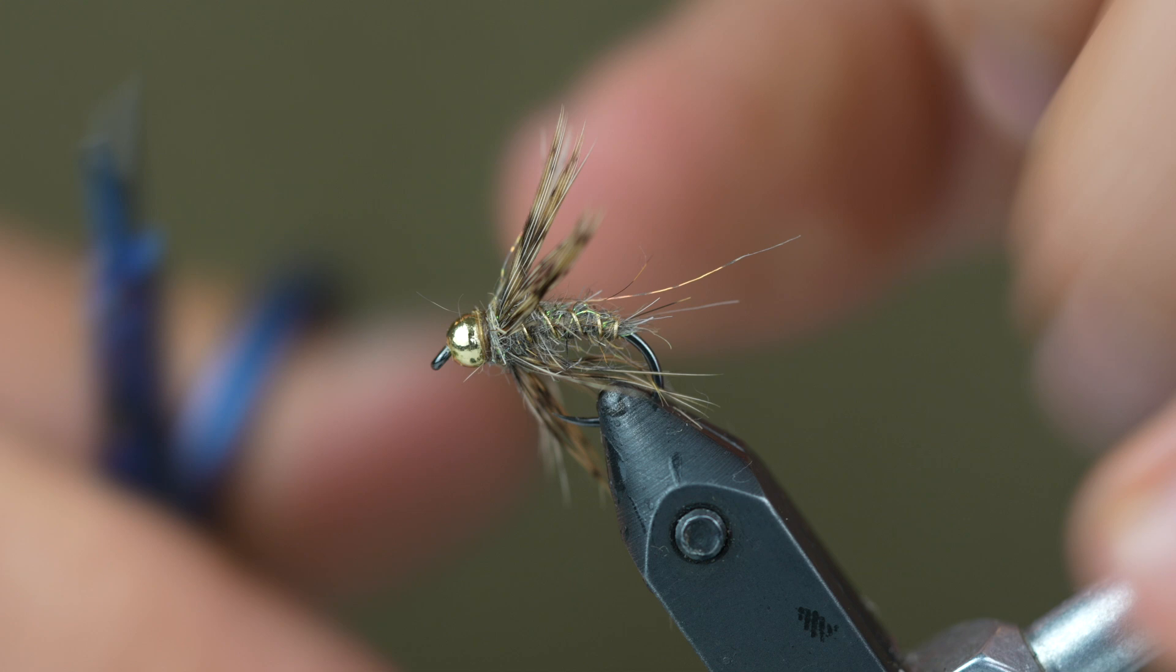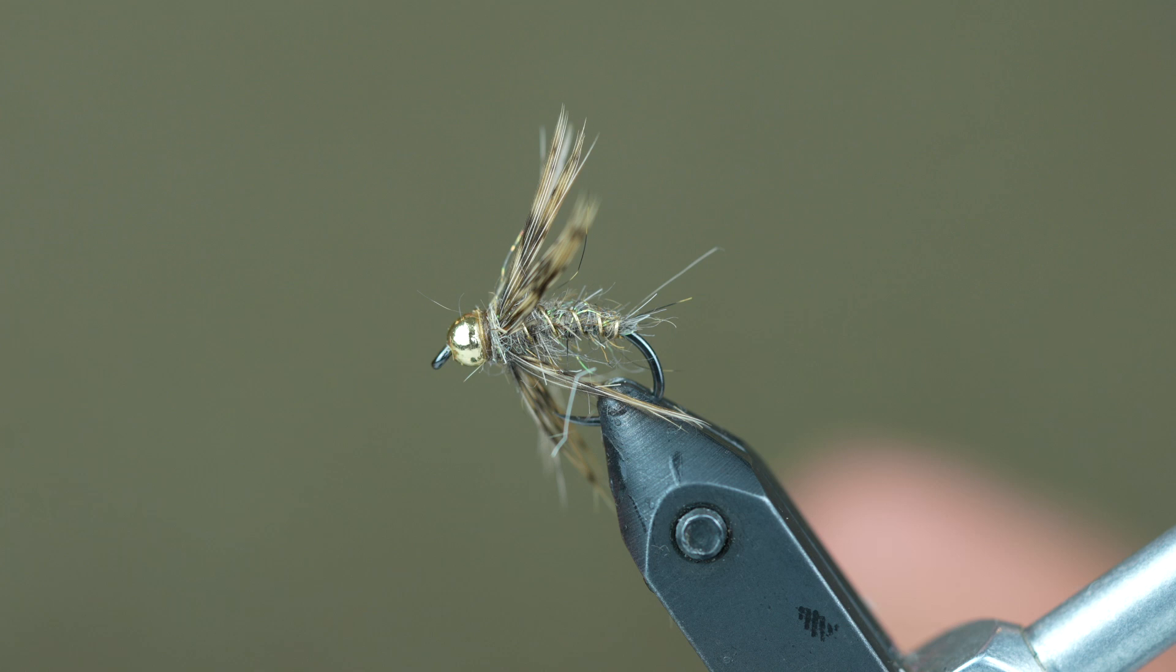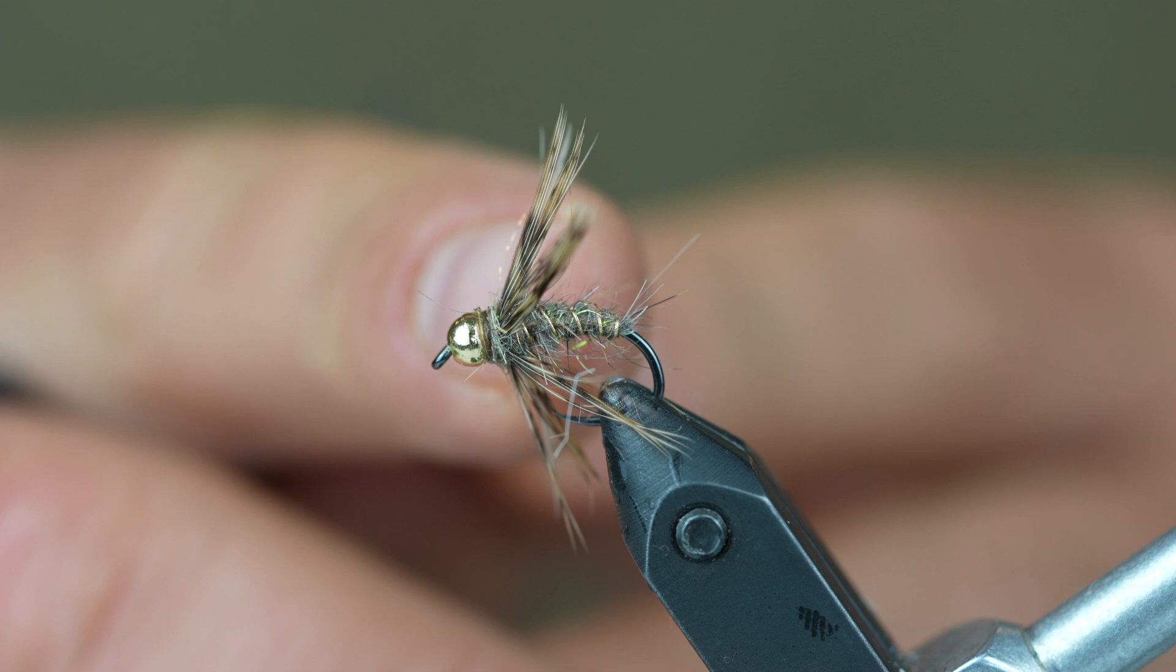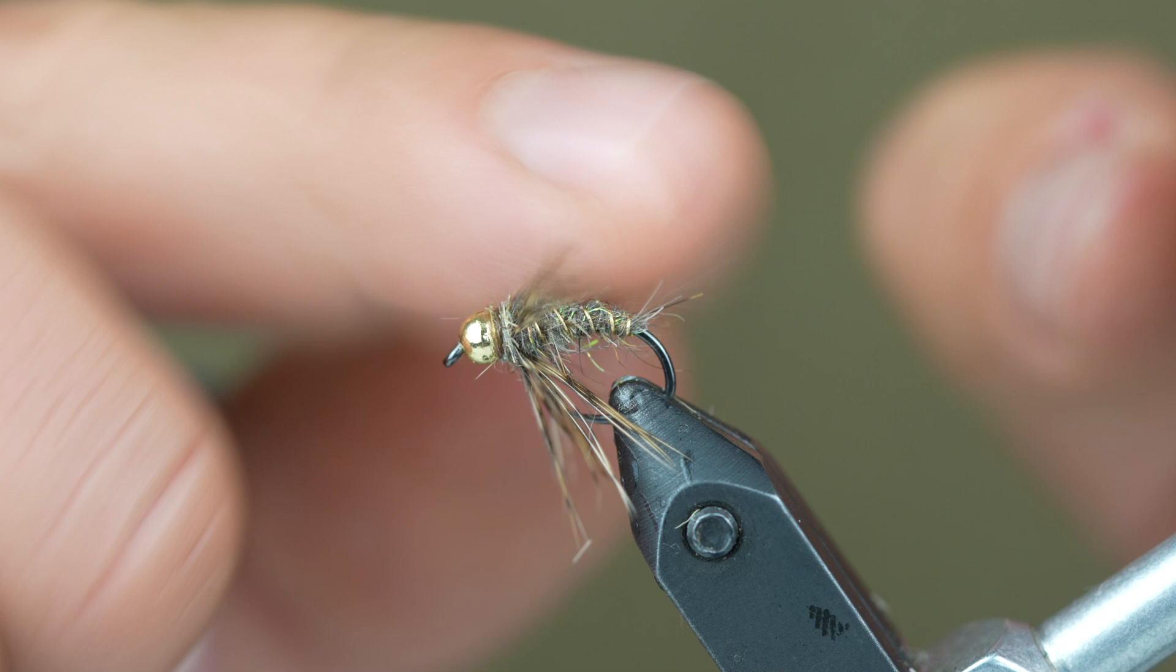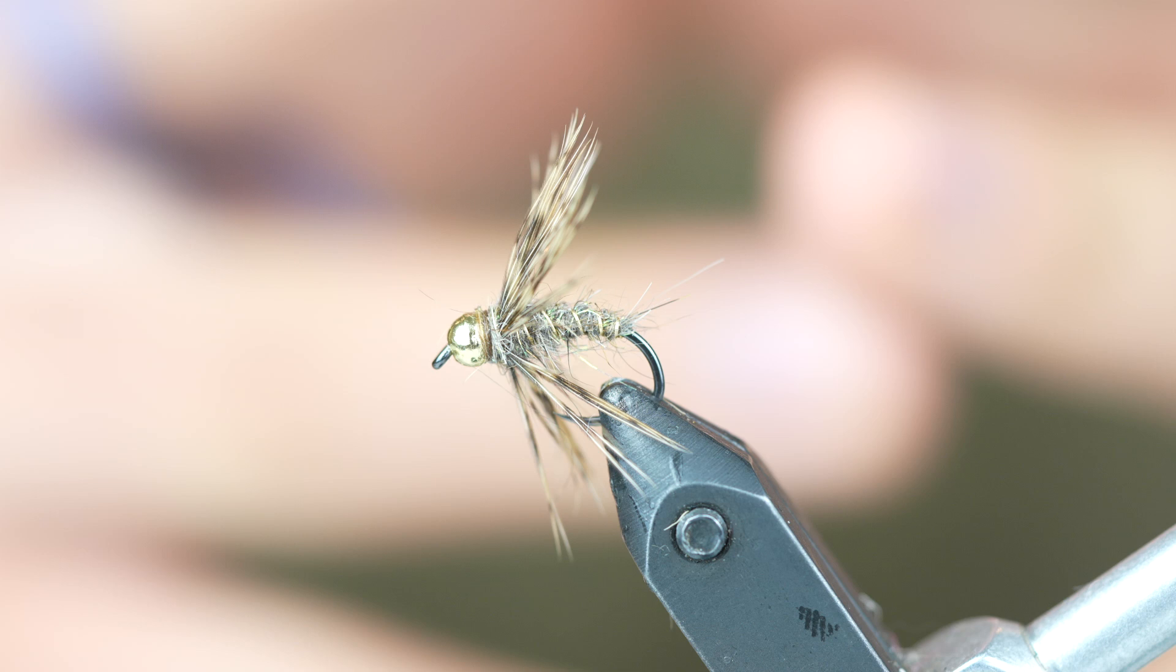That's pretty much all there is to it. This fly is really a platform. It can go a lot of different ways. You can use a lot of different colored dubbings here. You could use like a sparkle dubbing, like an ice dub or something for the thorax. You can use different soft hackles, different sizes. It's very much just a platform for you to kind of experiment with and have fun with.